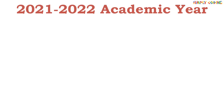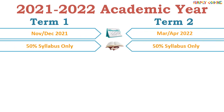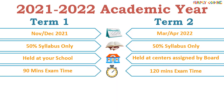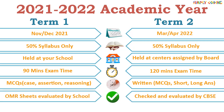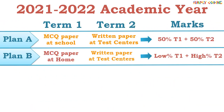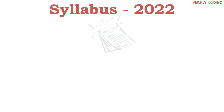To summarize: instead of one board exam, there are going to be two term exams — one in November/December and the other in March/April next year, with 50% syllabus each. Term one exam will be held in your school and term two exam will happen at centers assigned by the board. Term one exam will be 90 minutes with only MCQ questions; term two will be 120 minutes with a proper written paper including short and long answers. Term one can be evaluated at school, but term two will be checked by the board. They have also given Plan A, B, C, and D outlining how exams will be conducted if impacted by COVID.